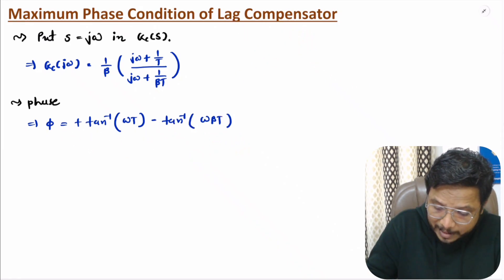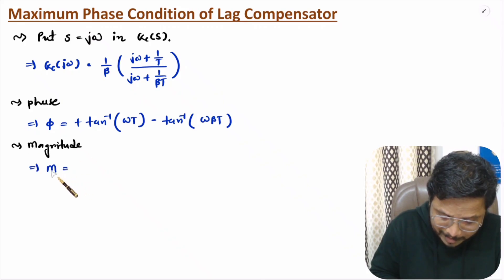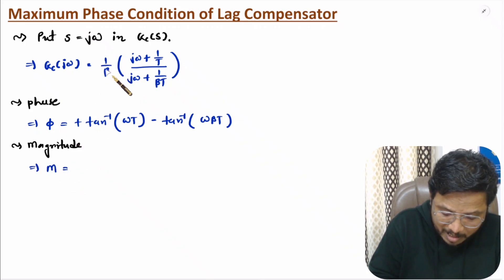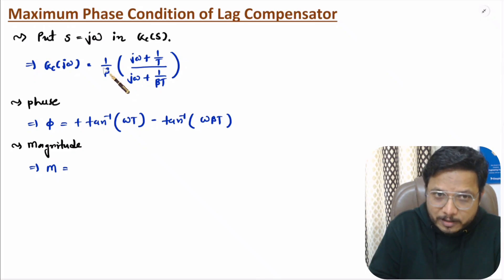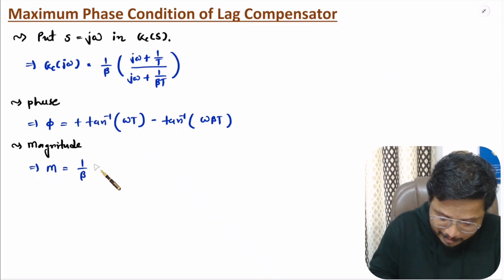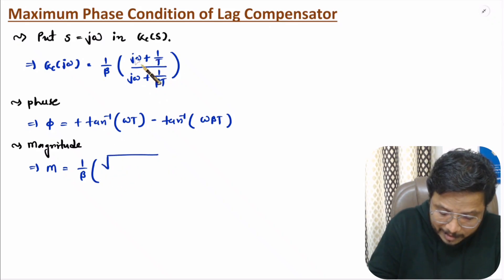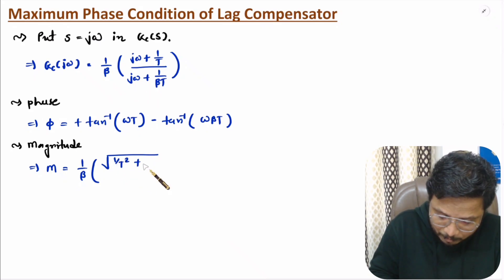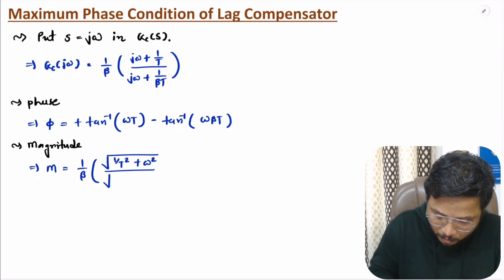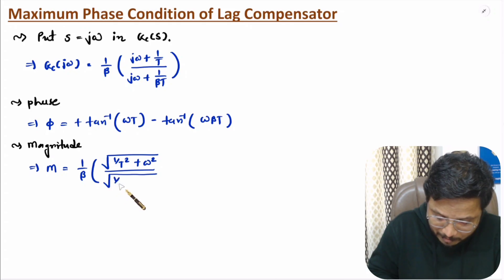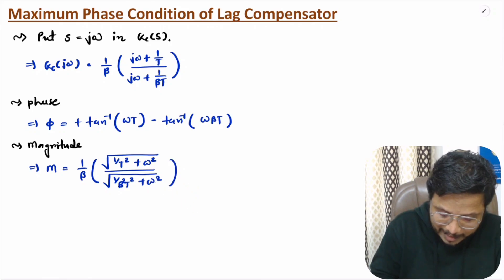The magnitude of lag compensator has constant one by beta as the attenuation constant. For the zero, magnitude is the square root of (one by T squared plus omega squared). For the pole, it is the square root of (one by beta squared T squared plus omega squared). That is how we can identify phase and magnitude.